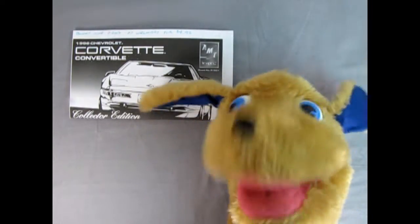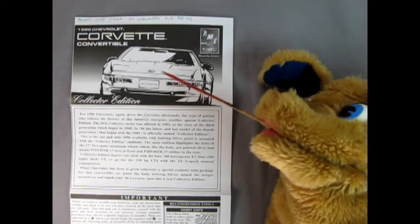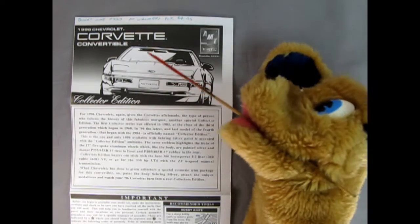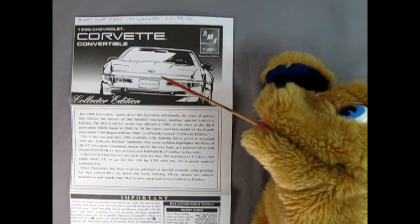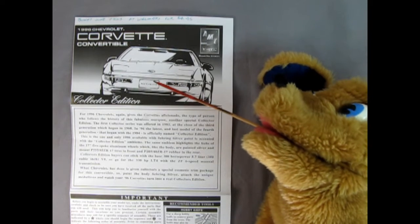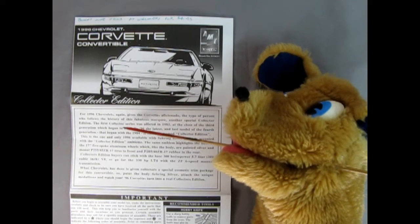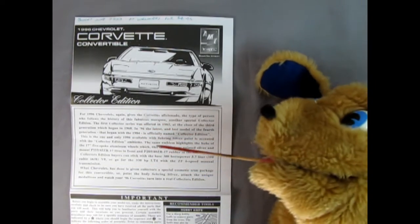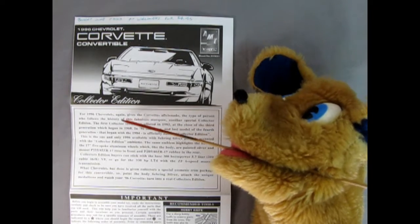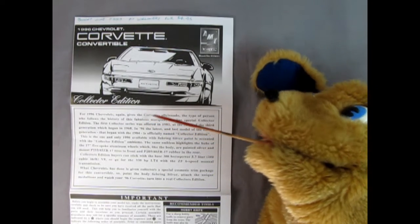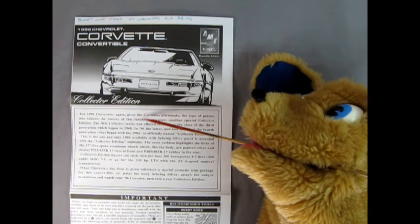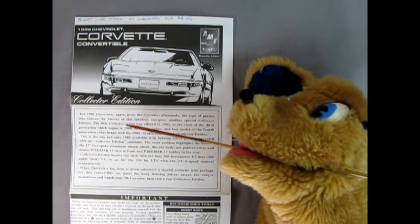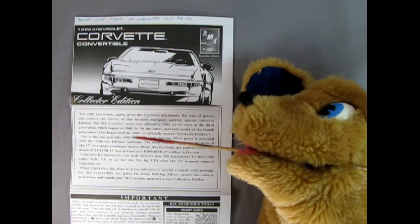All right, enough of that, let's get into these Corvette instruction sheets. So here we have our Corvette instruction sheet for our '96 Corvette convertible. It's basically the same, still looks good though. For 1996 Chevrolet again gives the Corvette aficionado, the type of person who follows the history of this fabulous marque, another special collector edition. First collector series was offered in '82 and now we got another.